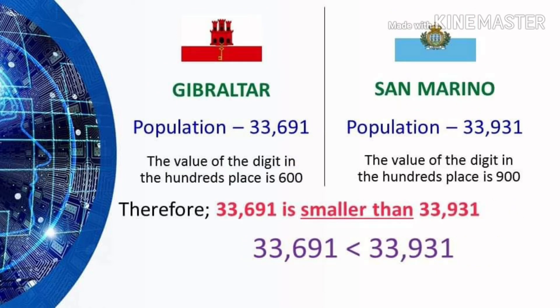Now we have the countries of Gibraltar and San Marino. The population of Gibraltar is 33,691, while the population of San Marino is 33,931. If you observe, they have the same number of digits. But the value of the digit in the hundreds place of Gibraltar is 600, while the value of the digit in the hundreds place of San Marino is 900. Therefore, 33,691 is smaller than 33,931.